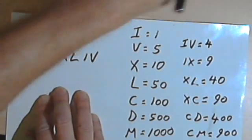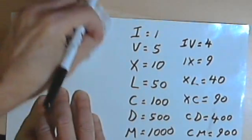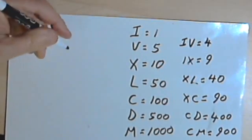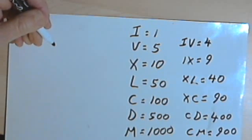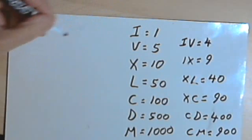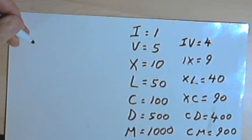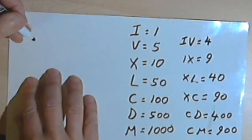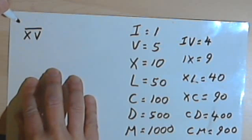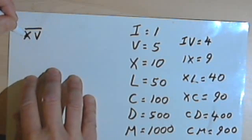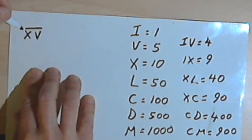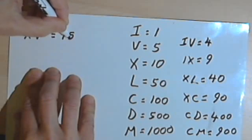Now, of course, using this system we can only go up to the thousands, and the Romans wanted to have bigger numbers than that. So they introduced another rule that said if you put a bar over a number, that multiplies the number by a thousand. So for instance, if I have XV and I have a bar over the whole thing, well XV by itself would be 15, and I'm going to use that bar to multiply it by a thousand, so that's going to be 15,000.